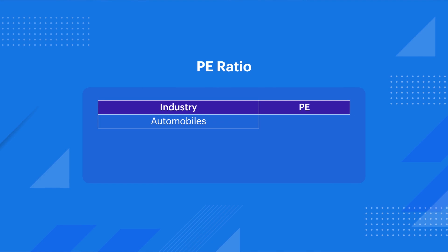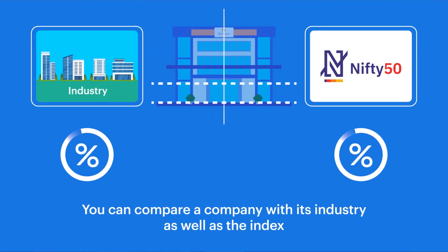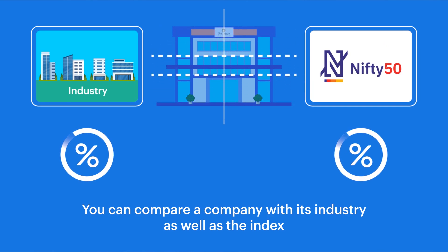For example, the automobile industry's P-E is around 39. Banks mostly have a P-E around 50. The telecom industry, which has mostly loss-making companies, has a negative P-E of around minus 40, because if earnings are negative, P-E ratio is automatically negative. And if you want to measure the economy, Nifty 50 is an index that measures the Indian economy, and its P-E ratio is around 26. This way, you can compare a company's P-E ratio to its industry or use a benchmark like Nifty 50.